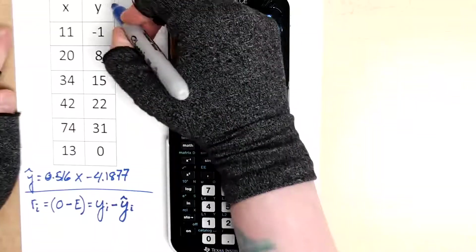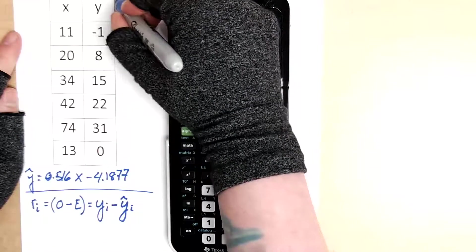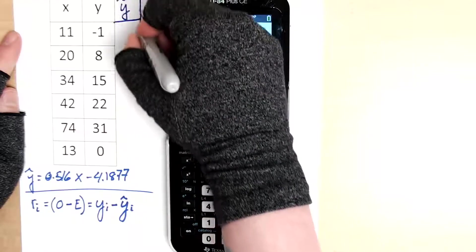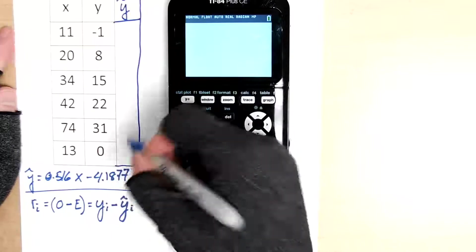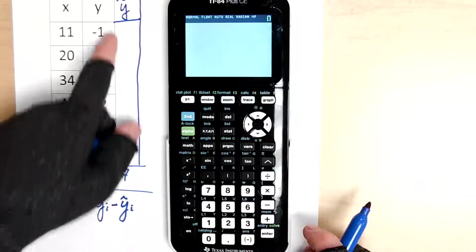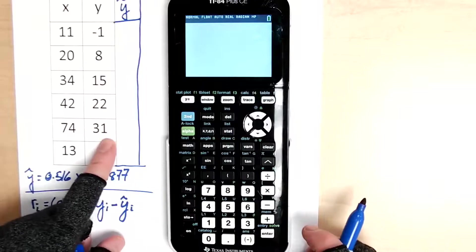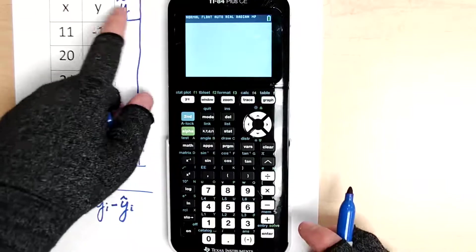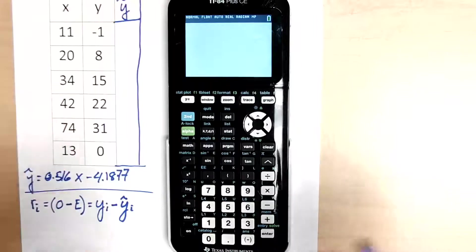So we would need to create another part to our table, we would need to find the y hats. And the way that we would do this is we would take our x values and plug them in and find our y hats. And then we can find each residual by taking the y's and subtracting the y hats.